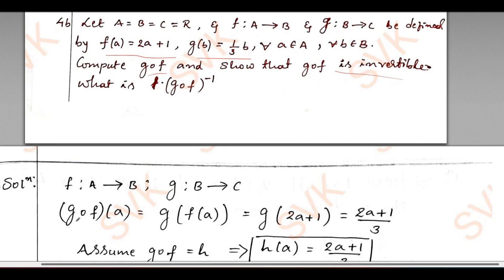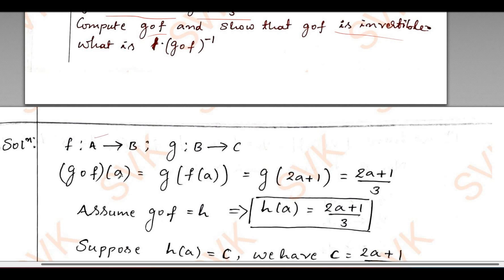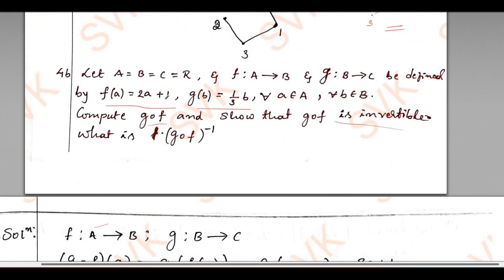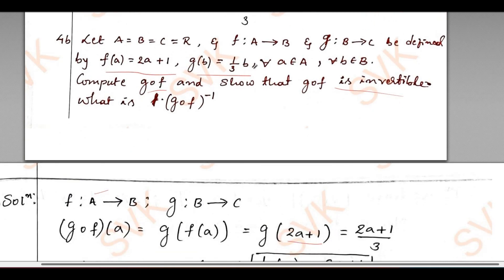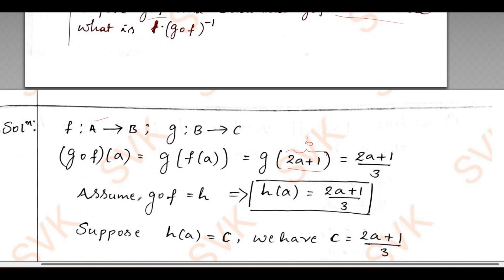Consider f is a mapping from A to B and g is a mapping from B to C. So (g∘f)(a) can be written as g(f(a)). What is f(a) defined? f(a) is 2a + 1. So in place of f(a), write down 2a + 1. What is g(b)? g(b) is b/3. This value is just b. So in place of b, substitute 2a + 1. So (2a + 1)/3 becomes (g∘f)(a). For my assumption, I am going to assume g∘f = h. Therefore, h(a) = (2a + 1)/3.